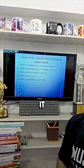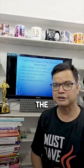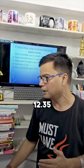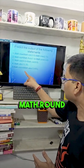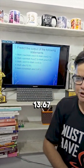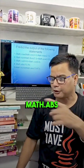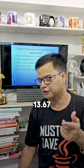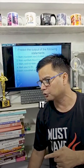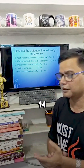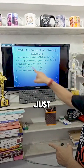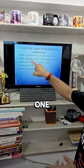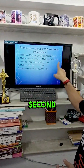Math.abs(-12.35) — it returns the absolute value, so it will be 12.35. Then Math.round(Math.abs(-13.67)): Math.abs(-13.67) returns 13.67, and then Math.round gives 14. Math.round returns an int. Just to confirm: first result is 3, second is 4.0, third is 19.0.